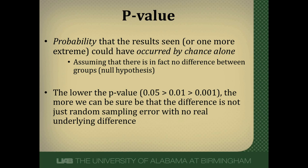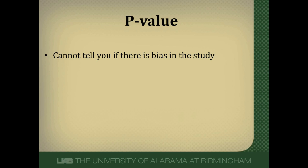The lower our p-value — the smaller it gets — the more sure we can be that the differences we see in our study are not just due to chance and are a real difference in underlying event rates between the two groups. However, a p-value cannot tell you if there's bias or systematic errors in the study design — it's just to tell us the role of chance. No matter what the p-value is, it will not help you figure out if the authors did a good job designing their study.